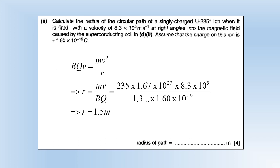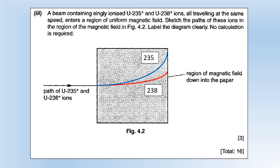For a beam of U-235 and U-238 travelling at the same speed entering the field, applying Fleming's left-hand rule — with positive charge moving to the left and the field directed into the paper — the particles are deflected upwards. U-238 has a bigger mass, and from the radius equation a bigger mass gives a bigger radius, so it bends less. Therefore U-235 curves more tightly at the top and U-238 follows a larger arc below it.